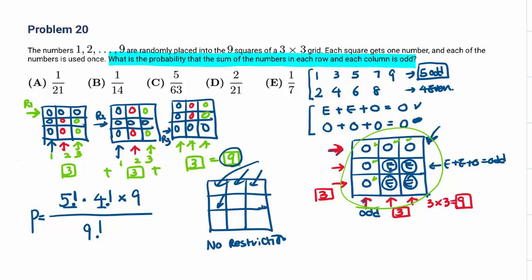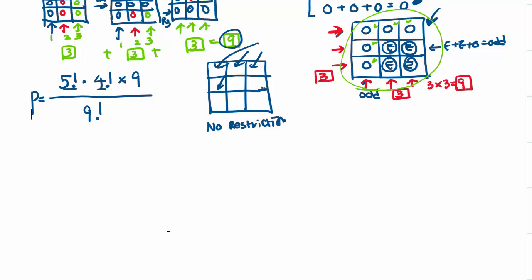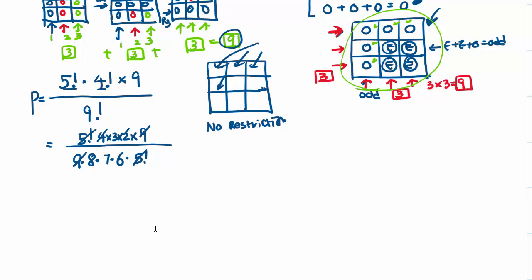Now let's simplify. 9 factorial equals 9 times 8 times 7 times 6 times 5 factorial. The numerator is 9 times 5 factorial times 4 factorial, where 4 factorial equals 4 times 3 times 2 times 1. Cancelling 5 factorial, 9, and 8 (since 4 times 2 equals 8), we get: 6 divided by 3 equals 2, leaving 1 over 14. So the probability is 1/14.